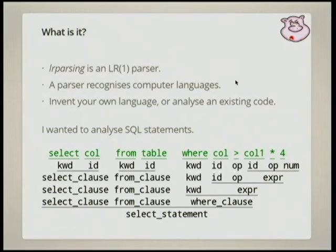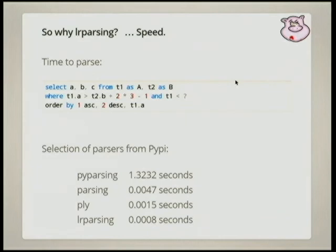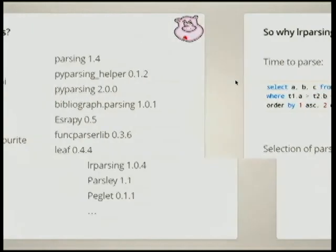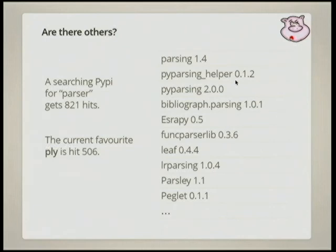There are lots of these mousetraps. A quick hit on PyPI will return about 821 results. The one I later discovered — thanks to Nick — that everyone actually uses is Ply, which happened to be number 506. I looked at a few of these but didn't get to 506. So why use LR parsing at all? If I had found Ply, it wouldn't exist — but I didn't.